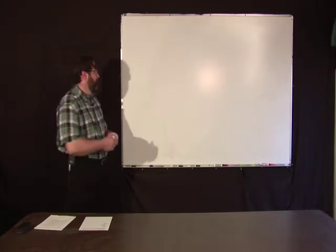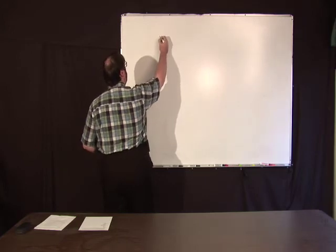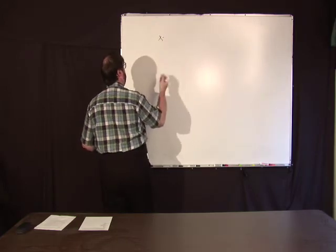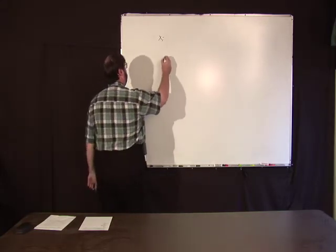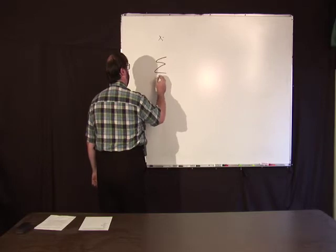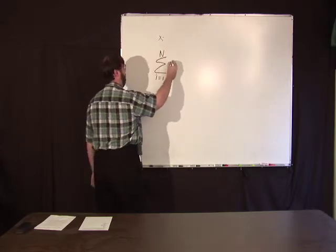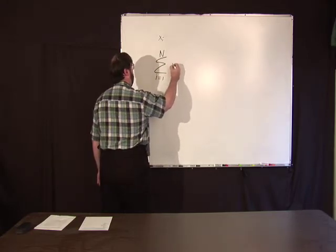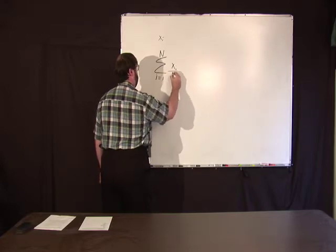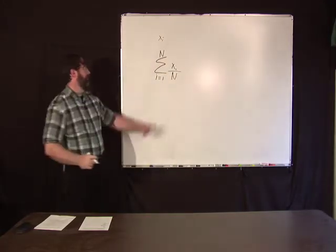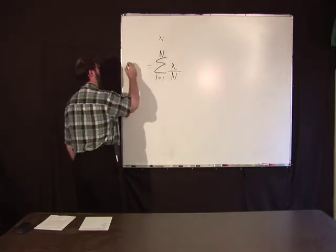One statistic is the mean. Let's say you have a bunch of data — we'll call it xi — a discrete data set labeled by the index i. The mean of the set of data is the sum from i equals 1 to n of xi, divided by n. This is the mean.